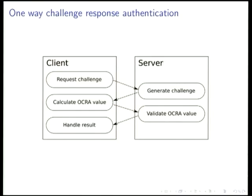There are three authentication modes: one-way authentication, two-way or mutual authentication, and signature mode. In one-way authentication, the client sends a request to the server for a challenge — this might be waking from a screensaver or initiating a login process. The server responds by generating a challenge according to the OCRA suite specification and sends it back to the client. The client uses the challenge, the locally stored specification, and the secret key to calculate an HMAC value and truncate it. The resulting number is sent to the server, which validates it using the same shared secret key and specification, then tells the client whether login was successful.